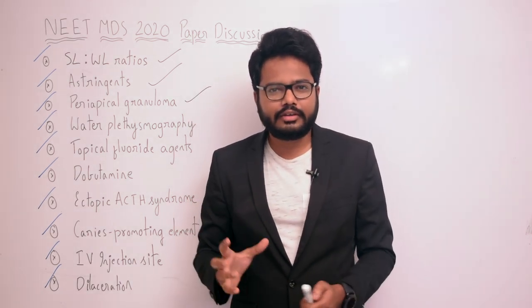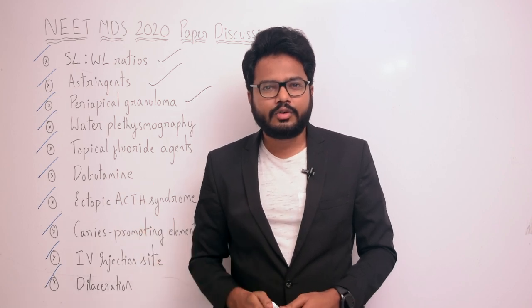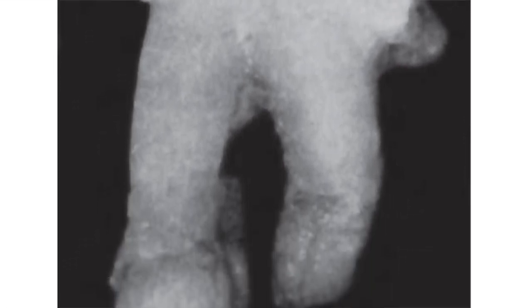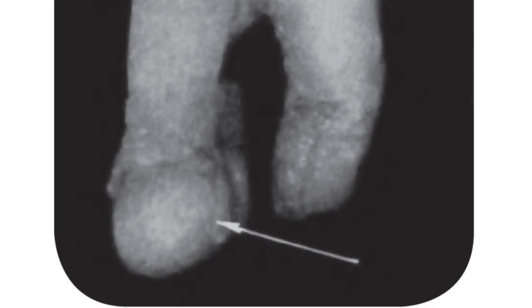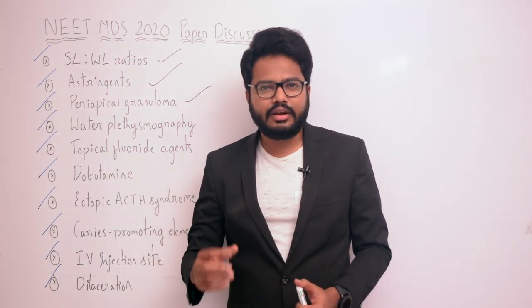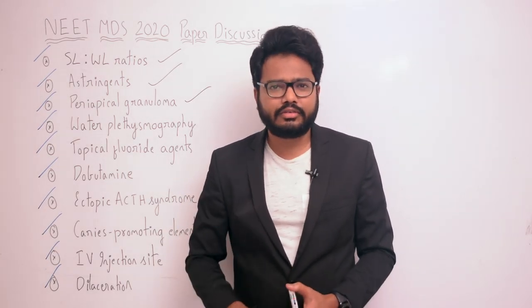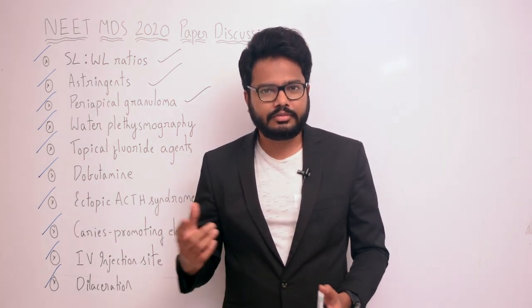Moving on to the next question: which structure is most commonly associated or attached to the root apex of an extracted tooth? As evident in the image and as given in Schaefer's, it is the periapical granuloma that often remains attached to the root when the tooth is extracted.